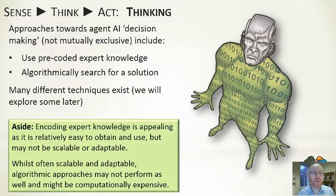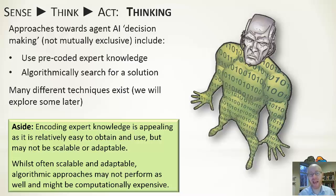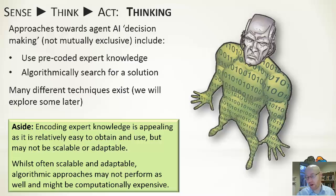Once we've got our sensing model, the next thing is thinking about what we sense — trying to make sense of what is visible, what does that mean, and what sort of actions we might want to take as a consequence. There are different ways to implement thinking and two broad approaches. One is to use expert knowledge, where you think about what a sensible person would do in this case and hard-code that: if you see this or find yourself in this situation, then do the following. The other approach is more algorithmic, where you run some type of algorithm to investigate, maximise, or minimise something and take actions based on that. They're not mutually exclusive — you can do both together if you wish.